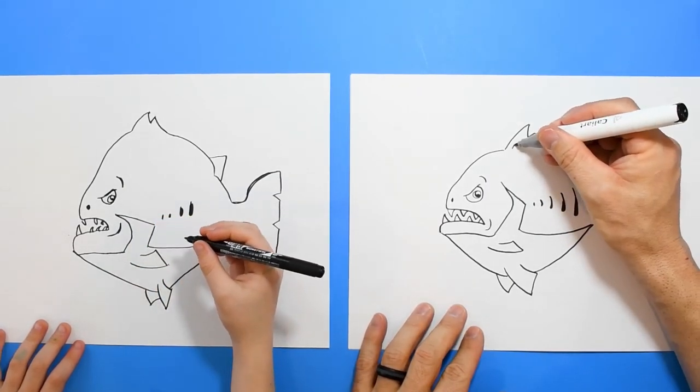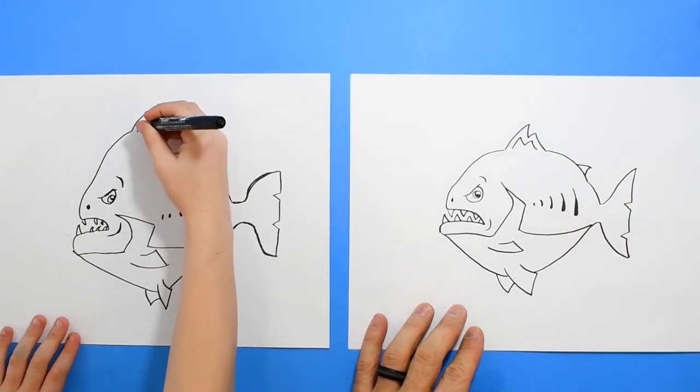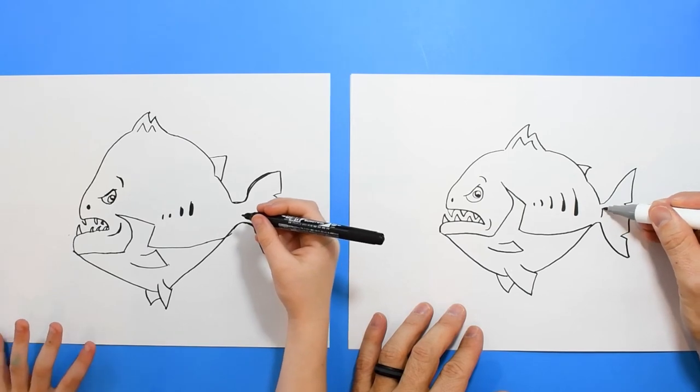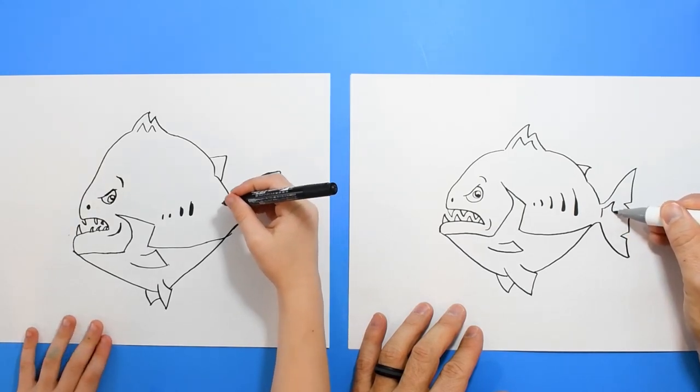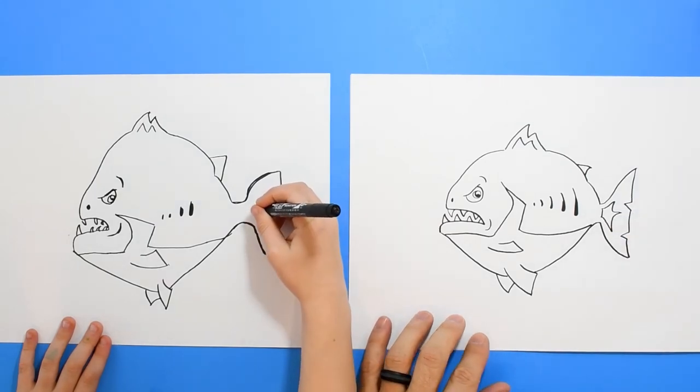On this fin, I'm going to kind of follow the shape of the inside, but just a little smaller. And same thing with this tail. We'll color that in. Awesome.